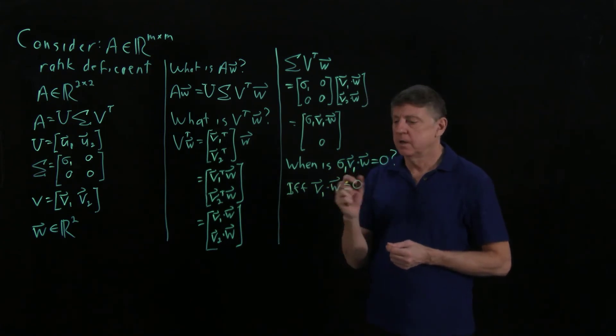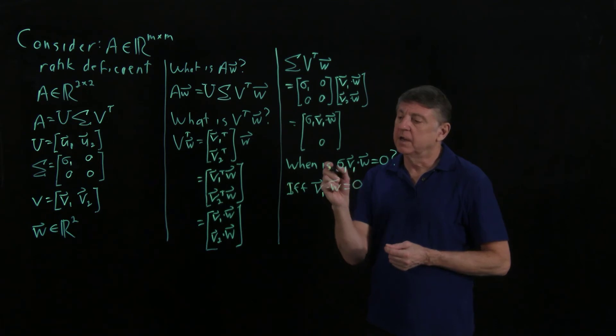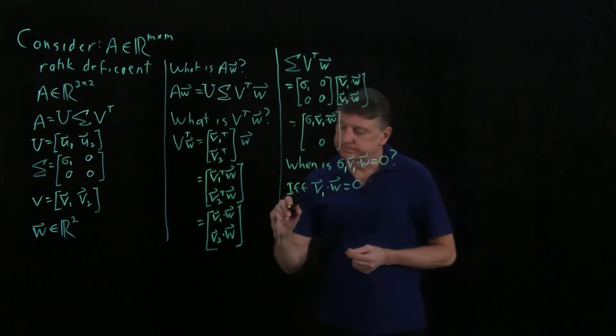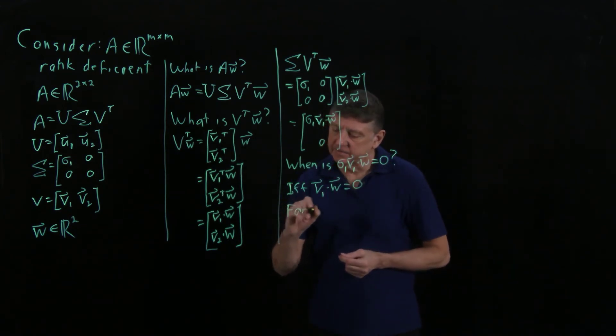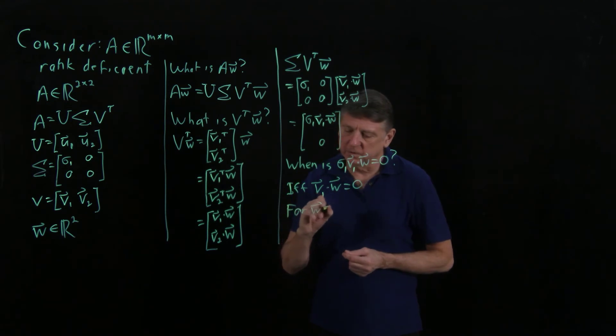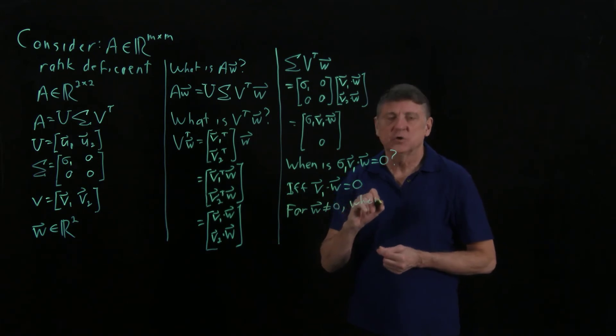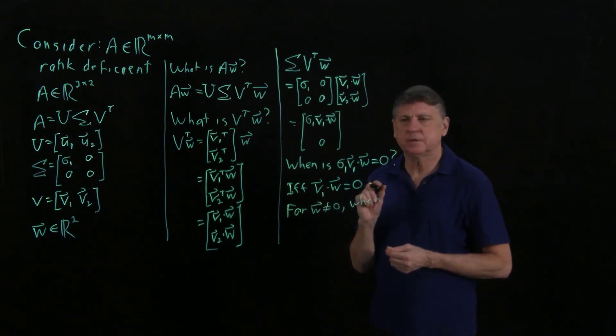And as we observe, that's trivially true when W is the 0 vector. When else is it true? So let's say for W not equal 0, this happens. So when does this happen?